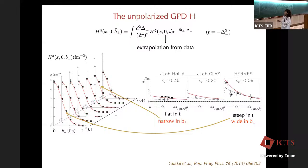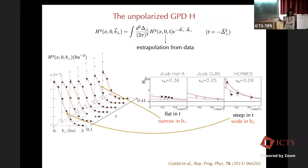Now we can look at what we can obtain from the data — for example, the unpolarized GPD. What we measure is the GPD in momentum space. You see here that we have xi equal to zero, and this relation between the GPD and the impact parameter parton distribution works only for xi = 0. But experimentally, you cannot measure xi = 0. You collect data as a function of t at different values of xi, and then you have to make an extrapolation. The map we obtain can never be completely model-independent.